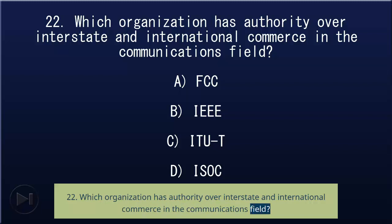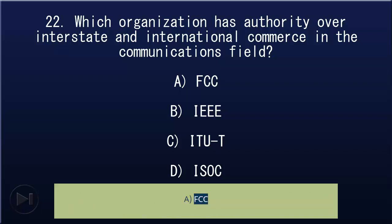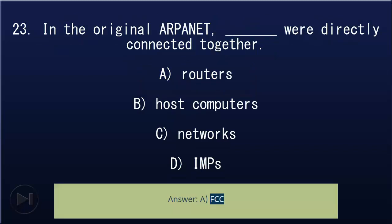22. Which organization has authority over interstate and international commerce in the communications field: A) FCC, B) IEEE, C) ITU-T, D) ISOC. Answer: A, FCC.